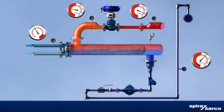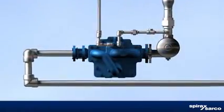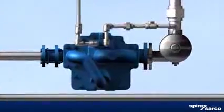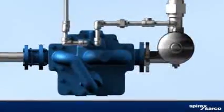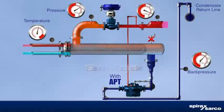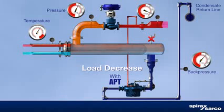The simplest way to cure stall is to install a steam powered automatic pump trap, such as a Spirax Sarco APT series. Pump trap operation is based on condensate level alone, with live steam pressure removing condensate under all load conditions, even vacuum.